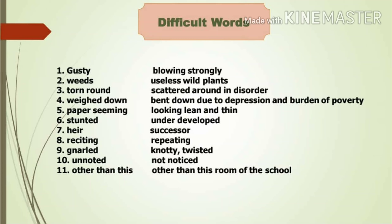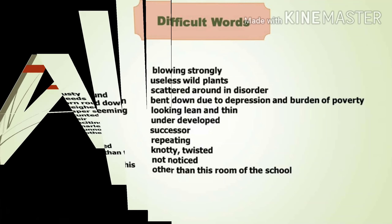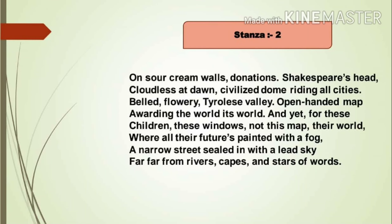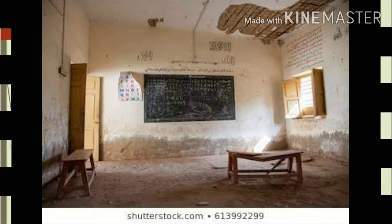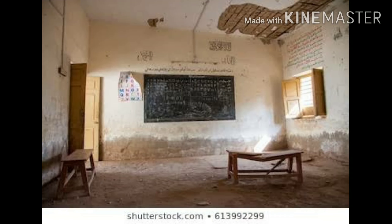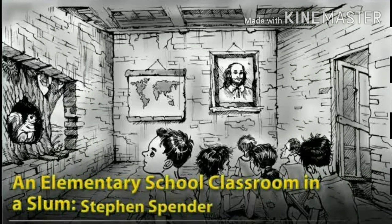Here are some difficult words from the first stanza so that you can understand it better. In the second stanza, Spender portrays the pathetic condition of the elementary school classroom. He says: 'On sour cream walls, donations.' This classroom is run by donations given by rich people, and one can see evidence of these donations on the creamy walls of the classroom.